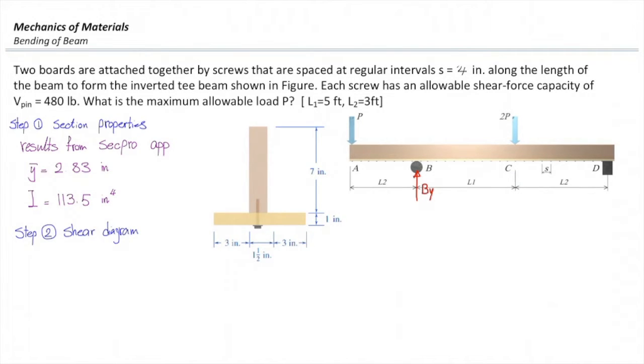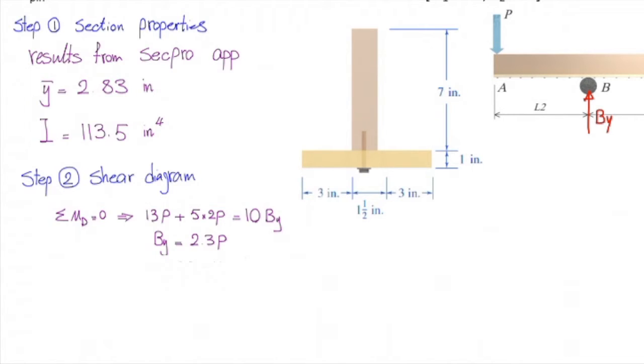First we need to determine the reaction forces By and Dy. Sum of the moments about D, so By would be 2.3P, and sum of the forces in the y-direction gives me P plus 2P equals By plus Dy, which means Dy equals 0.7P.